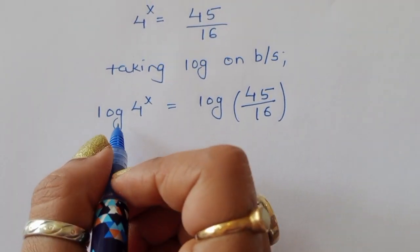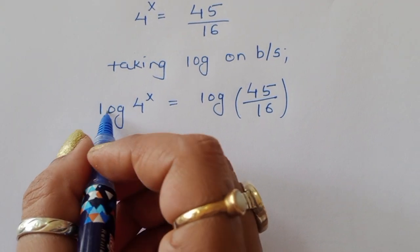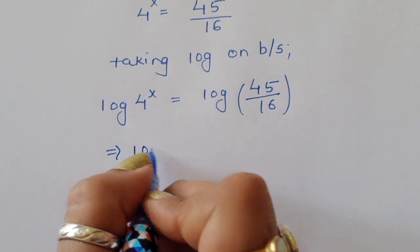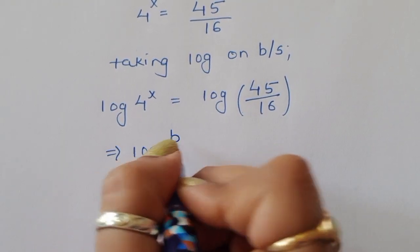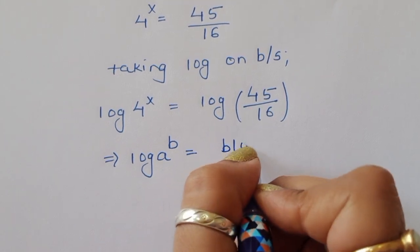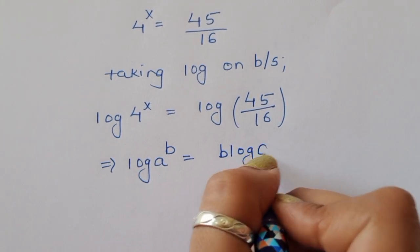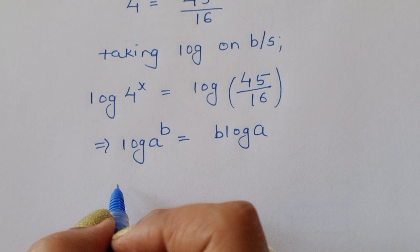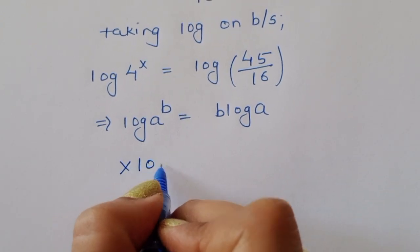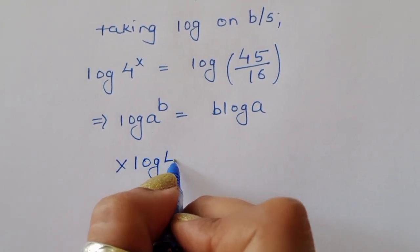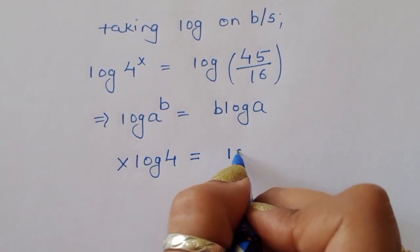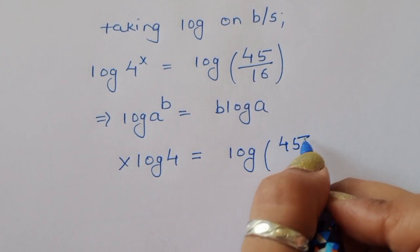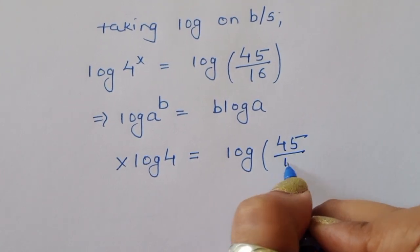Again we use the formula: log of a power b is equal to b times log of a. Using this formula, we get x times log of 4 is equal to log of 45 divided by 16.